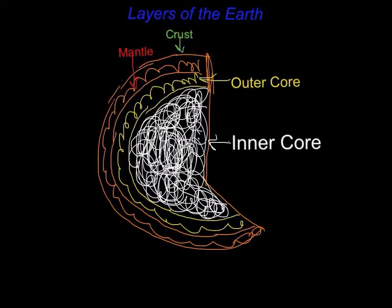The inner core is made of solid iron and nickel, and the outer core is made of iron and is very dense.